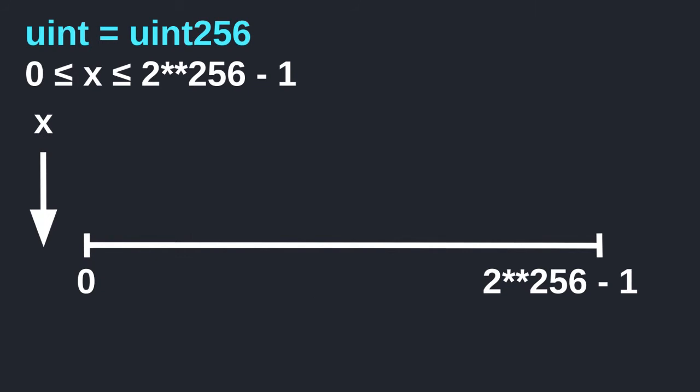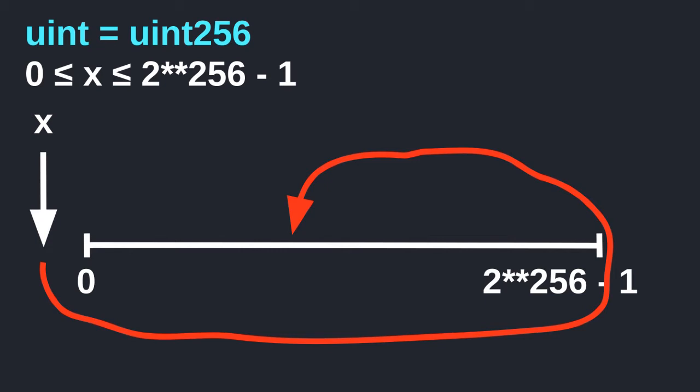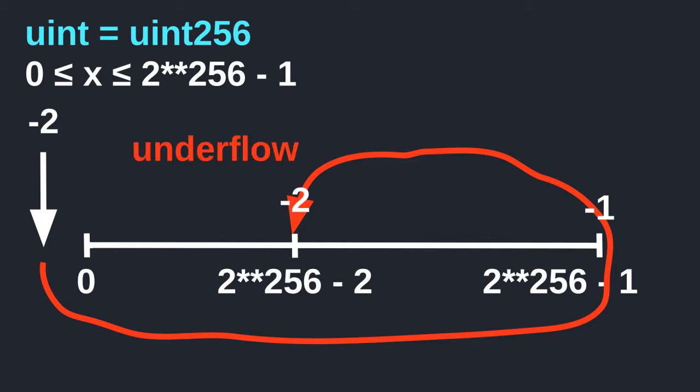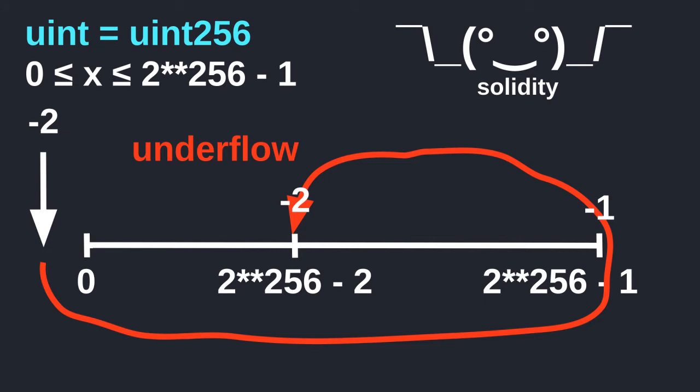Underflow happens in the opposite direction of overflow. Here we have a number that is less than 0, which is the minimum range. In this case, the number will be counted backwards from the maximum number. For example, where would negative 2 end up on the range between 0 and 2 to the 256 minus 1? Minus 1 would give us the maximum number, which is 2 to the 256 minus 1, and negative 2 will be 1 less than that, which is 2 to the 256 minus 2. This is underflow, and again Solidity will not give you any warnings or errors.